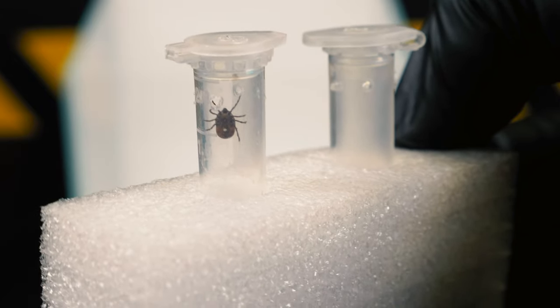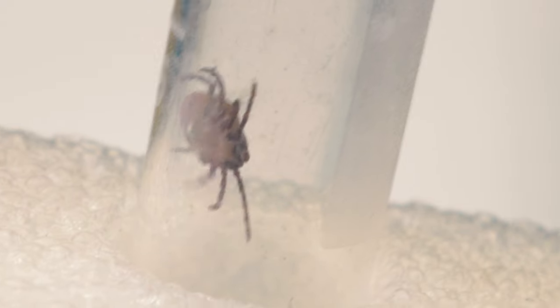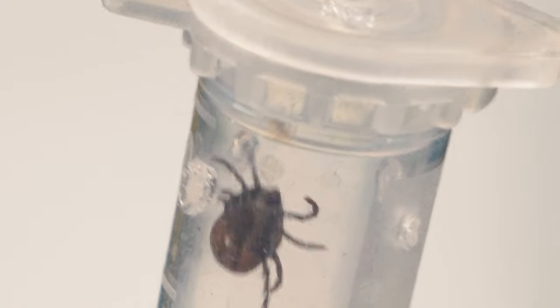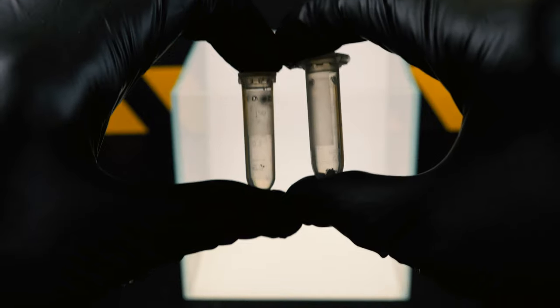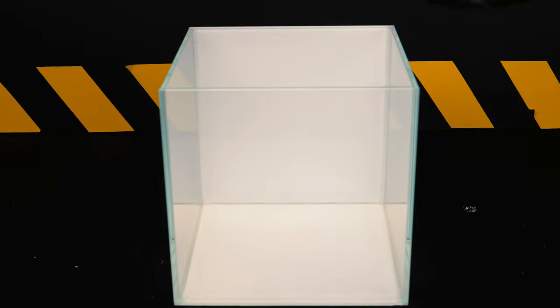Probably at least once in your life each of you has encountered such unpleasant insects as ticks. They can be different. For example, Argus tick, Pasture tick, Meadow tick, Brown dog tick. Right now you see a brown dog tick.